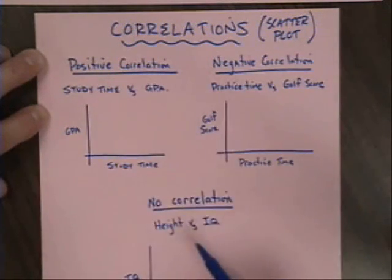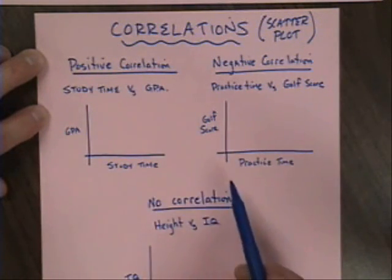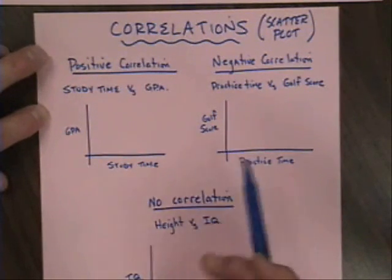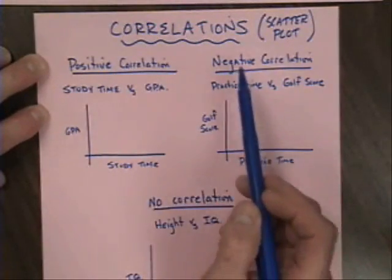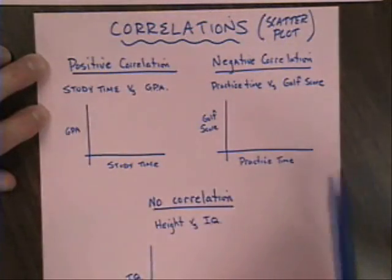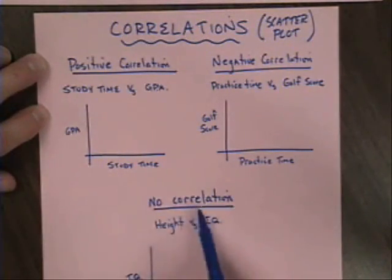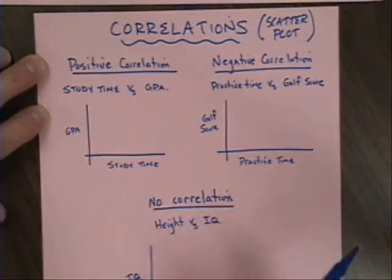We have three different types of correlations — well, two different types, and then one that's kind of a non-example. You have positive correlations, you have negative correlations, and then you have times when there's simply no correlation whatsoever.